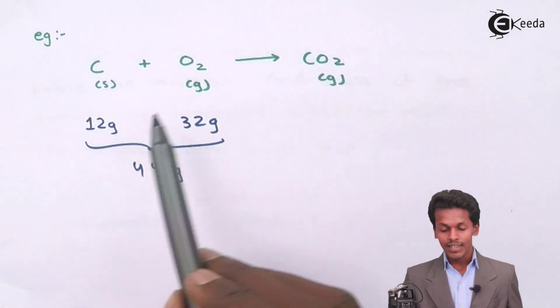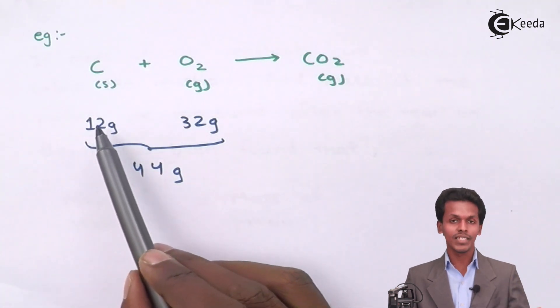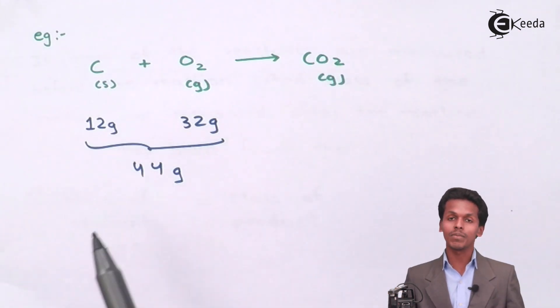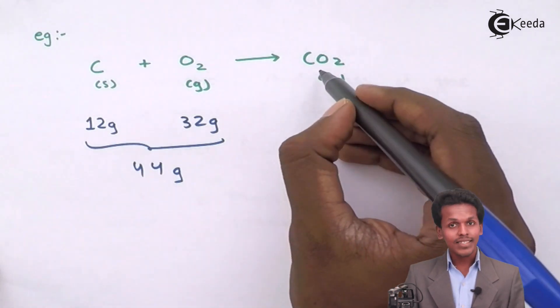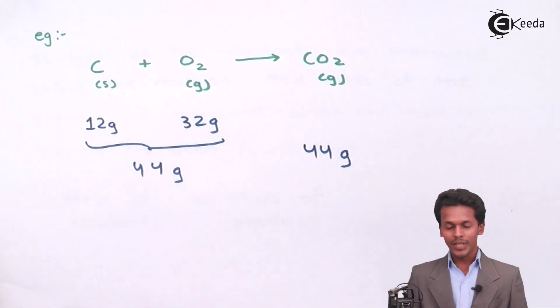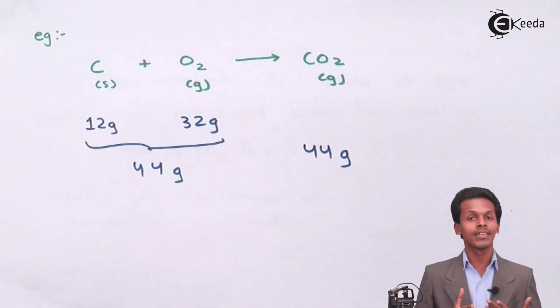Why? Because carbon weighs 12 grams (one mole) and oxygen weighs 32 grams (two atoms), so carbon dioxide will also weigh 44 grams. You can convert the reactants into products while maintaining the mass.